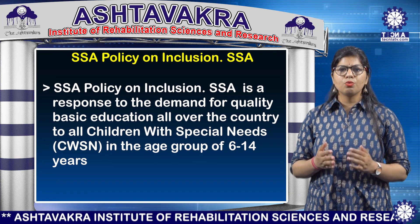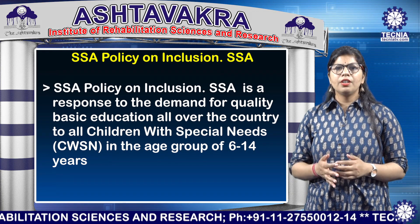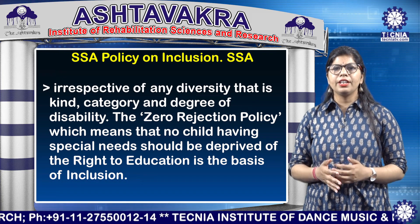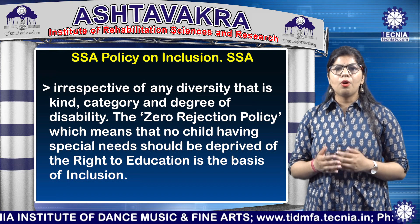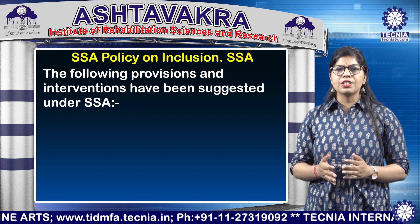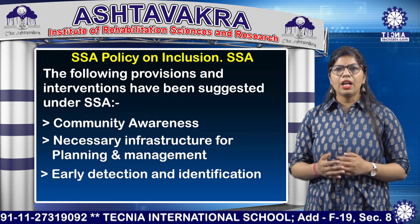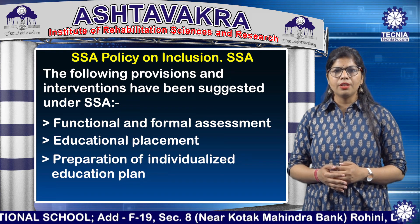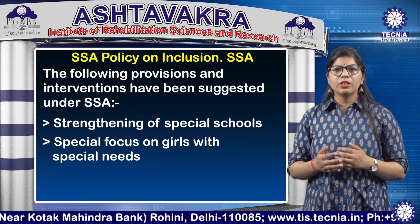SSA Policy on Inclusive Education: Sarva Shiksha Abhiyan is a response to the demand for quality basic education all over the country for all children with special needs in the age group of 6–14 years, irrespective of the kind, category, and degree of disability. The zero-rejection policy means that no child with special needs should be deprived of the right to education. Provisions under SSA include: community awareness, necessary infrastructure for planning and management, early detection and identification, functional and formal assessment, educational placement, preparation of individualized education plans, provision of aids and appliances, teacher training, resource support, strengthening of special schools, and special focus on girls with special needs.